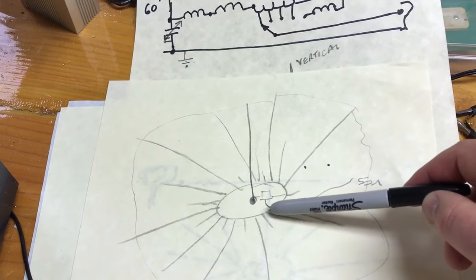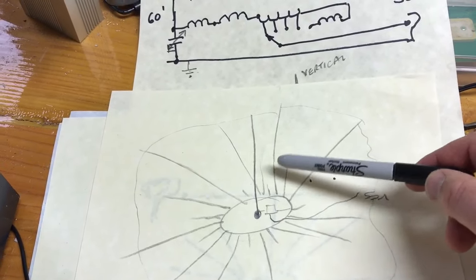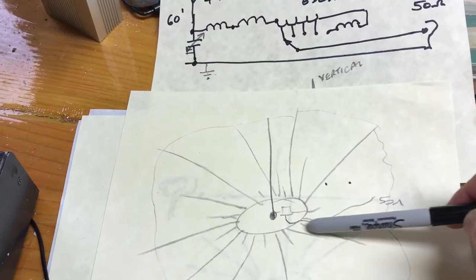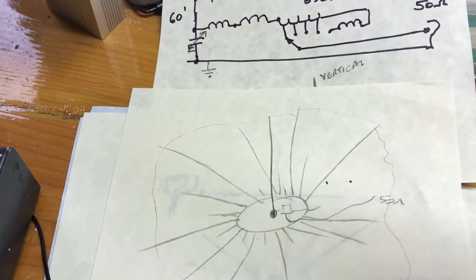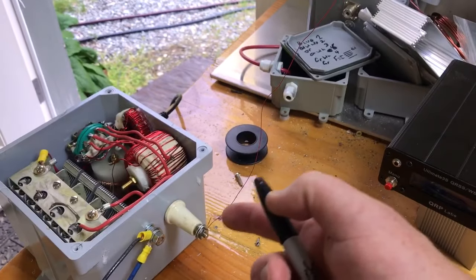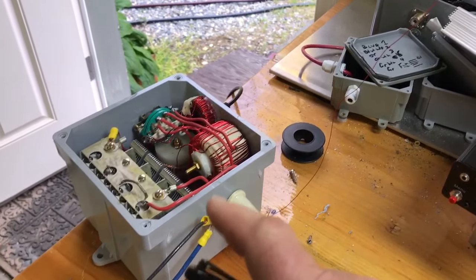The more radials you have closer into the base of the aerial, the better it collects current and returns it back to the tuning unit, making a good circuit. But I can't do that because this is a holiday tuning unit—a vacation tuning unit.